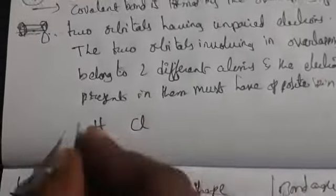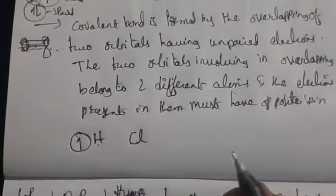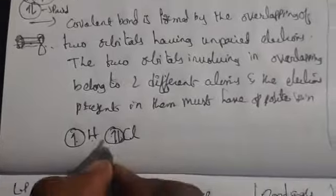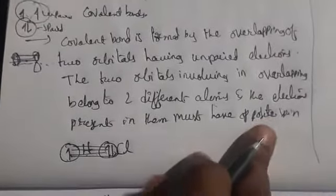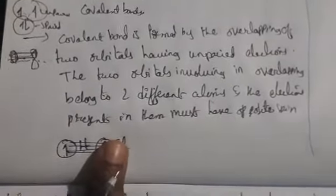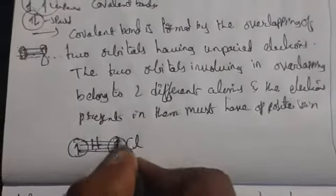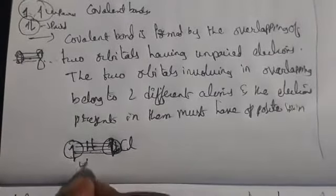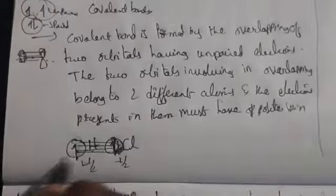For example, taking hydrogen and chlorine: hydrogen has only one electron and chlorine has two electrons. The spins must be opposite — one in the clockwise direction and the other in the anti-clockwise direction — so these two orbitals should overlap to form a covalent bond.